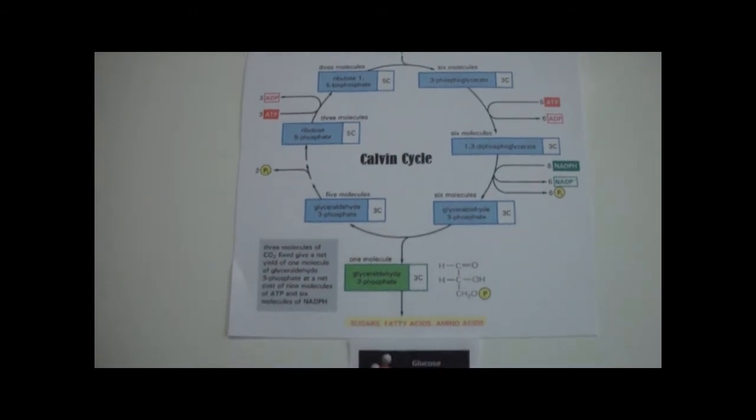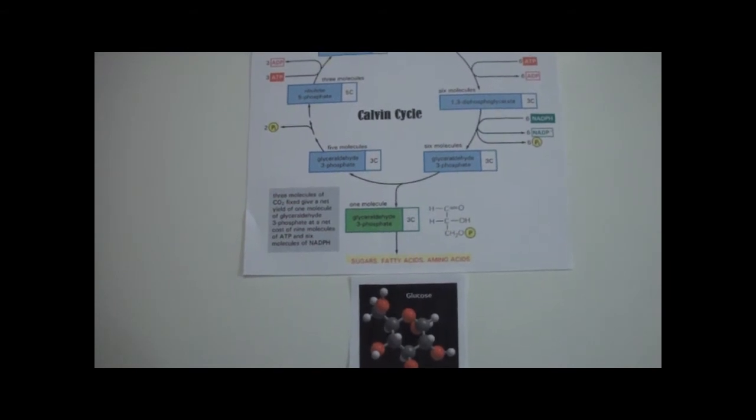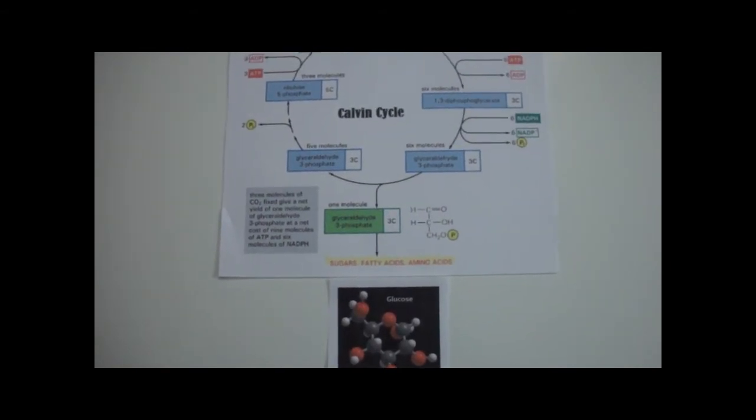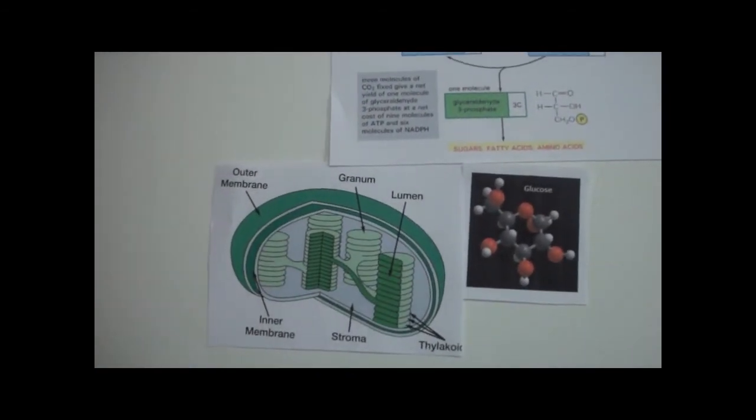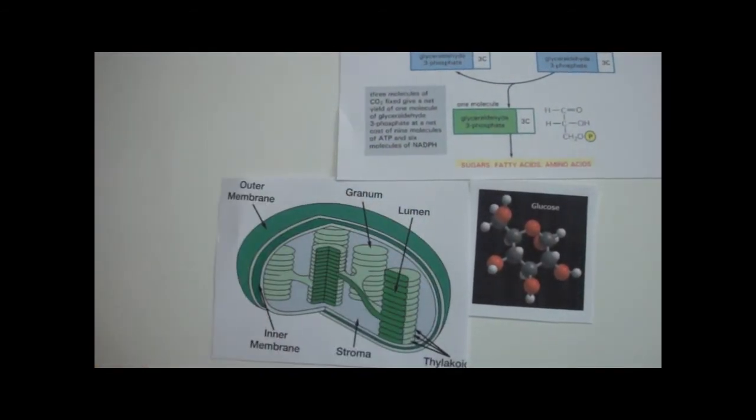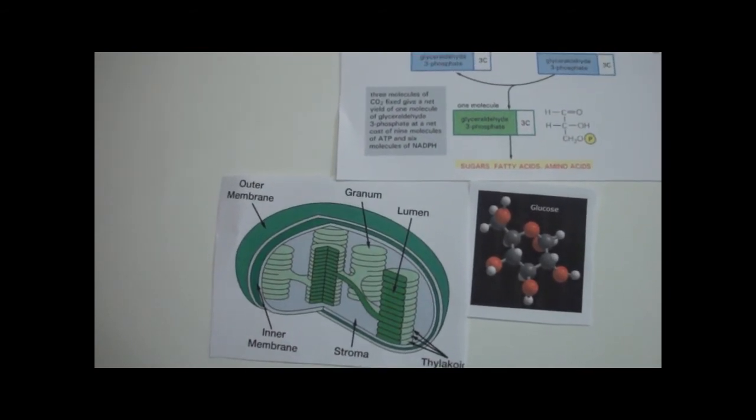Unlike light reactions, which take place in the thylakoids, the Calvin cycle takes place in the stroma of the chloroplast. There are three stages of the Calvin cycle: carbon fixation, reduction, and the regeneration of carbon dioxide receptor ribulose bisphosphate, RuBP.